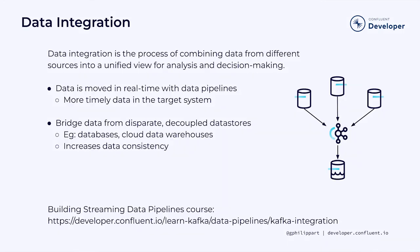A very common use case is data integration, which combines data from different sources to build a unified view for analysis and decision making. With data pipelines, data is moved in real time as it changes — while it is current and relevant — making the data more timely in the target system. Data pipelines bridge data from disparate sources in a decoupled way, from databases to cloud data warehouses, making the data more consistent so all systems have the same view. The first data integration tip is to make sure that the data moves quickly enough, requiring you to estimate the throughput and latency requirements of the platform. Next, identify early which connectors you will need for your data sources. Make sure you are notified when pipelines fail or when lag builds up so you can resolve issues as quickly as possible.